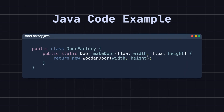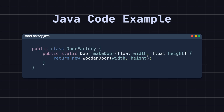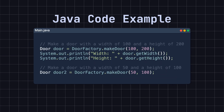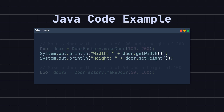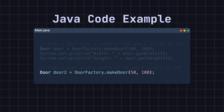Finally, we define a simple factory class, DoorFactory. It has a static method, MakeDoor, that takes width and height as parameters. This method returns an instance of any class that implements the door interface. Inside the method, it creates a new WoodenDoor instance and returns it. By calling the MakeDoor static method on DoorFactory and passing in the width and height, say 100 and 200, we can get an instance of Door. We can then print out the width and height of this door. Similarly, we can use DoorFactory to quickly create another instance of Door, say Door2, with a width of 50 and a height of 100.